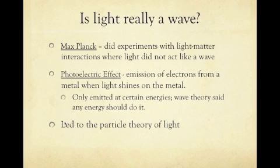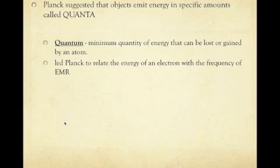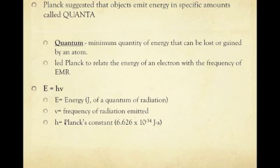Planck suggested that objects emitted energies in specific amounts and he said that they were quanta. A quantum is a minimum quantity of energy that can be lost or gained by an atom. This led Planck to relate the energy of an electron with the frequency of the electromagnetic radiation and develop this equation: E = hν, where E is energy, h is Planck's constant (6.626 times 10 to the negative 34th joule-seconds), and ν is frequency. Specifically, each frequency would emit a certain amount of energy.